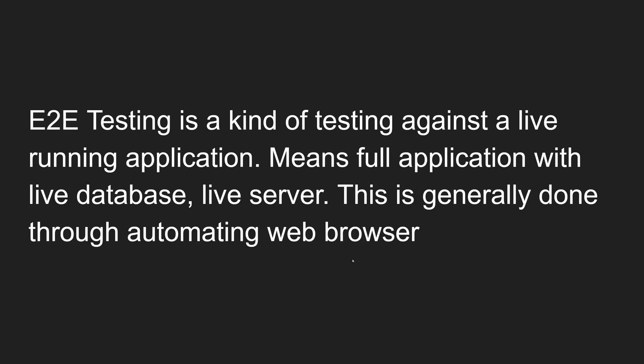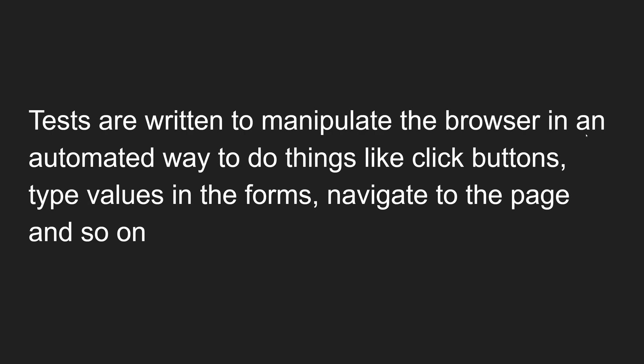E2E testing is normally done on a live running server. It is generally done by automating the web browser. Tests are written to manipulate the browser in an automated way — clicking buttons, typing values in forms, navigating to pages, and similar tasks. The browser will open the production application URL, navigate to other pages, click buttons, and submit forms, all automated, just as a real user would.